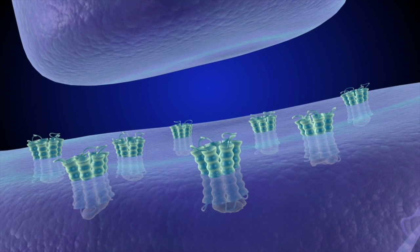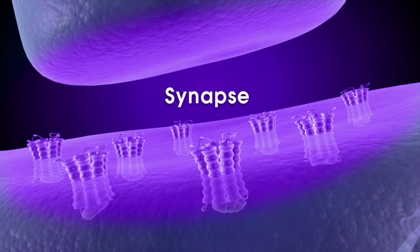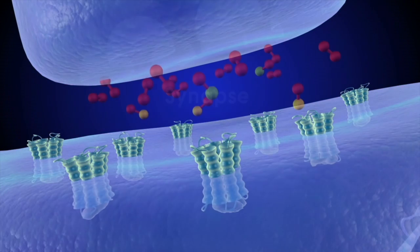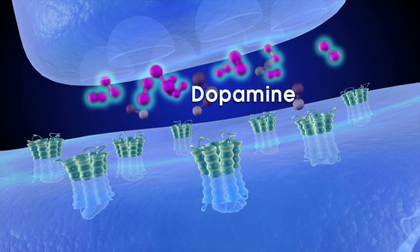The small gap between the sending and receiving cells is called the synapse. In the reward circuit, dopamine neurons release the neurotransmitter dopamine.